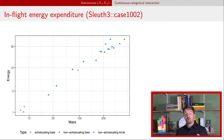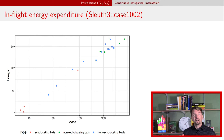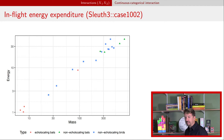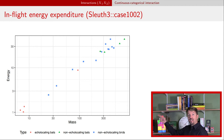Now we move to the situation with a categorical and a continuous explanatory variable. In this example, we're looking at energy expenditure for bats and birds. We have three groups: echolocating bats shown as red circles, non-echolocating birds as blue squares, and non-echolocating bats as green triangles. The question is whether we need an interaction to capture differences in how mass affects energy depending on type.